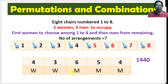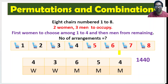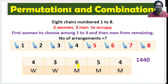When the first man comes, 2 seats were already taken by women from the first 4, and the remaining 6 are empty. So this man has 6 options — 2 empty chairs from 1 to 4, plus chairs 5 to 8. The second man has 5 options left, since 2 women and 1 man have taken seats. The third man has 4 options, because 4 seats are already taken.